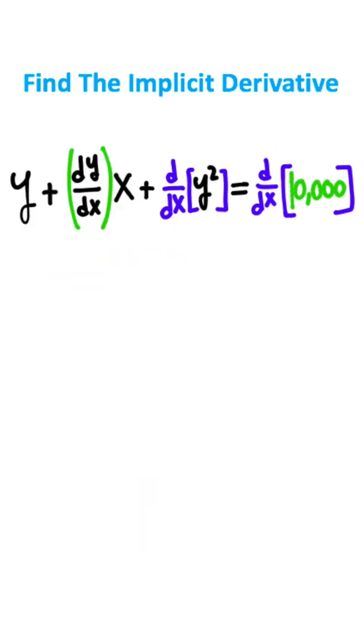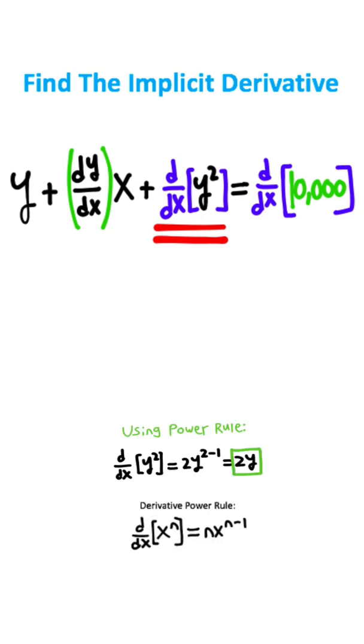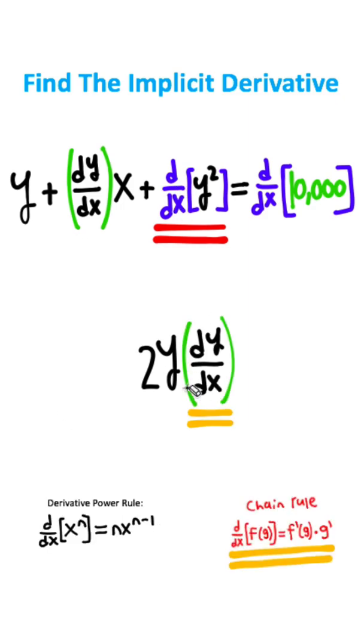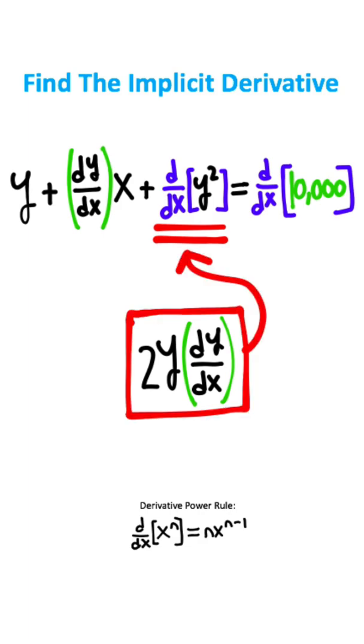This is the evaluated derivative. Now take the derivative of y squared. For the derivative of y squared, we use the power rule which gives 2y. But since we took the derivative of y with respect to x, we need to include dy over dx here. This is the derivative of y squared.